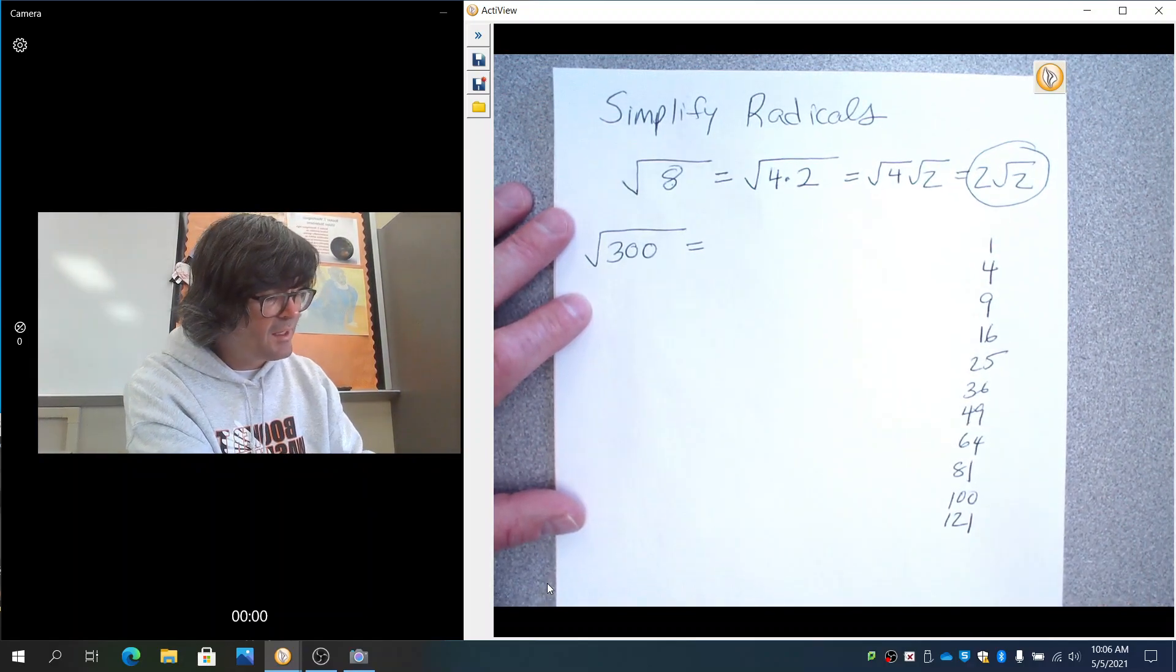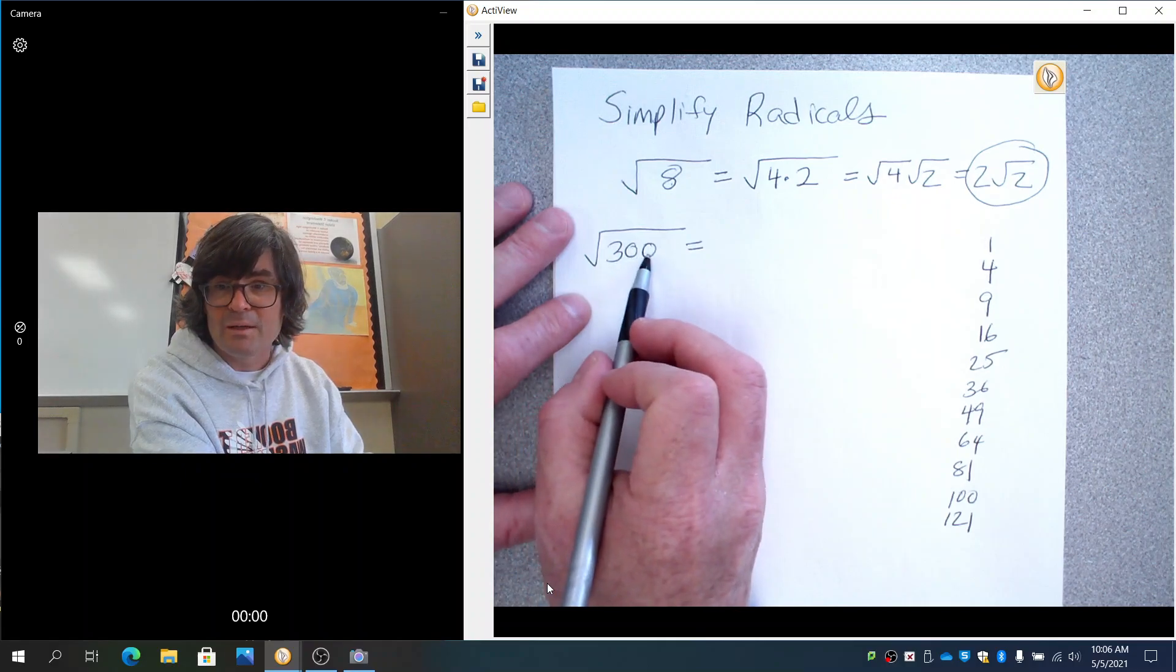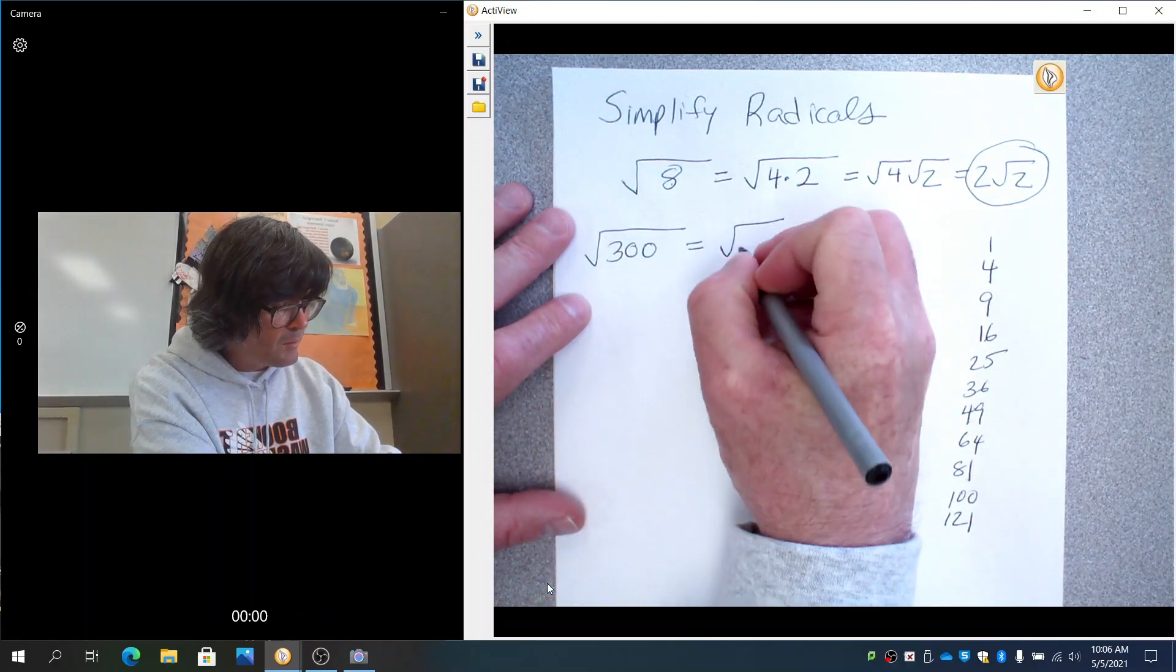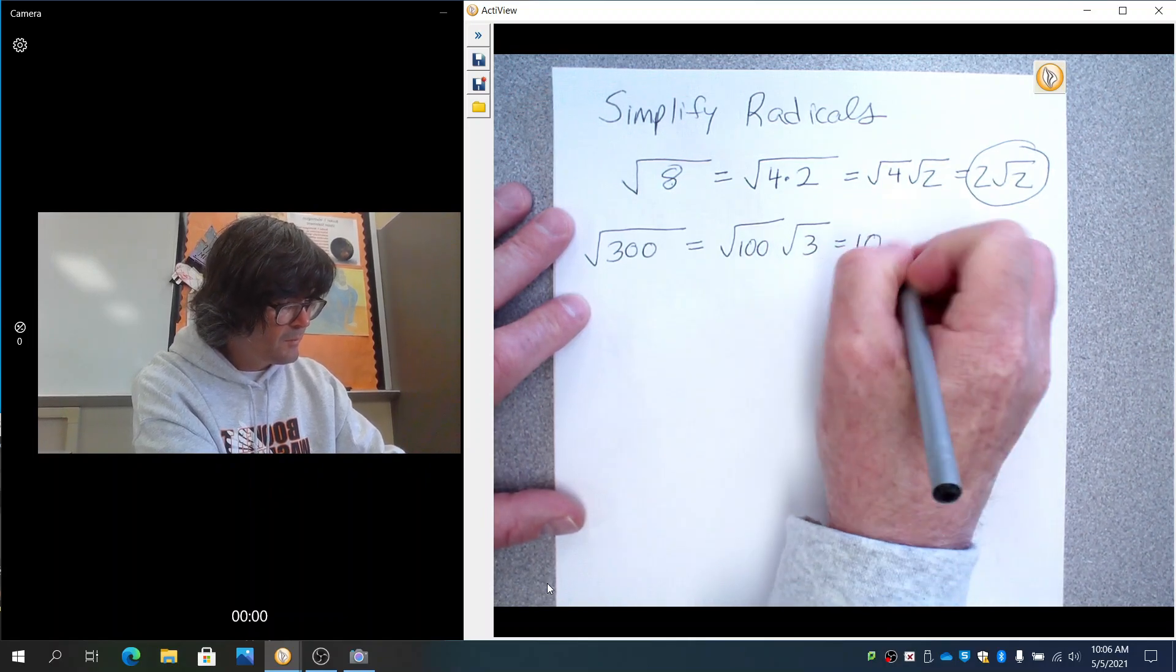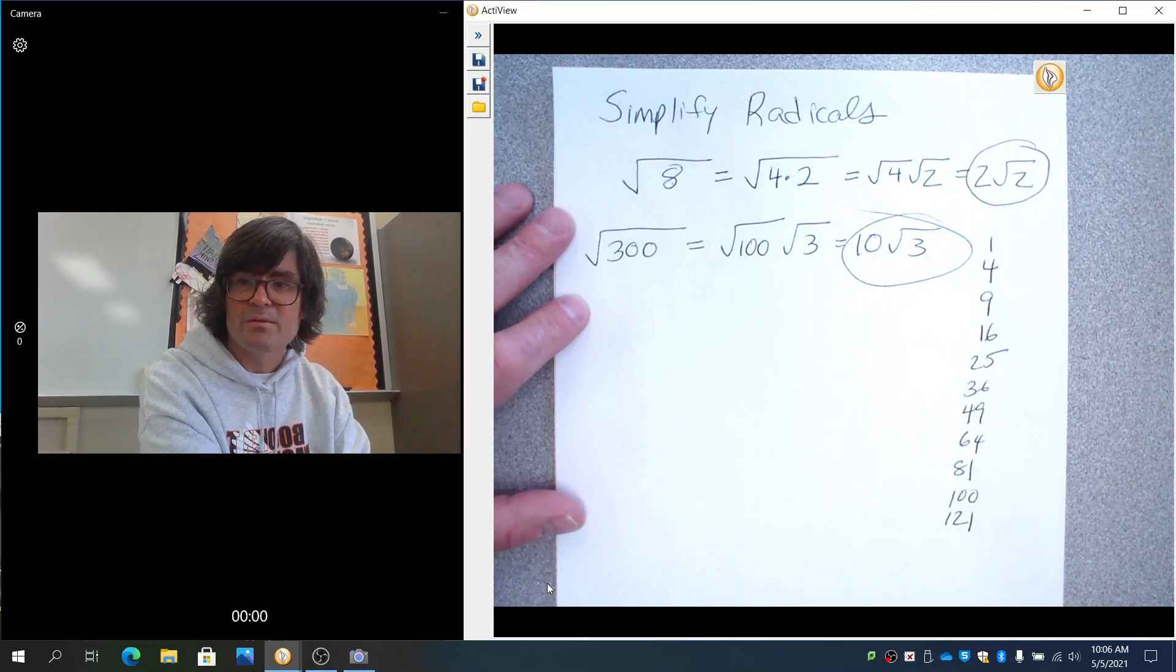Think about that list. I'm noticing that 100 goes into 300 evenly, so this becomes the square root of 100 times the square root of 3, which is 10 roots of 3.